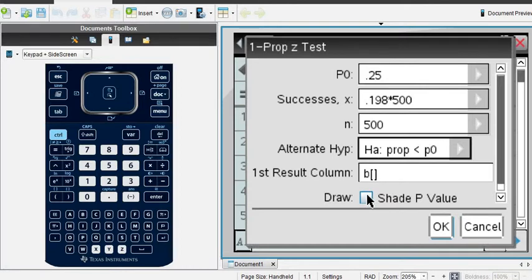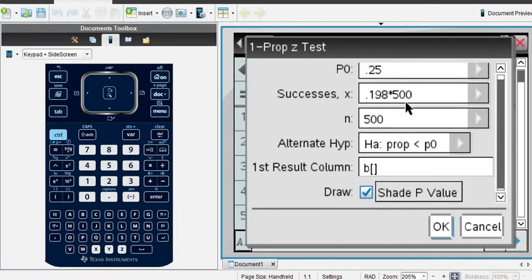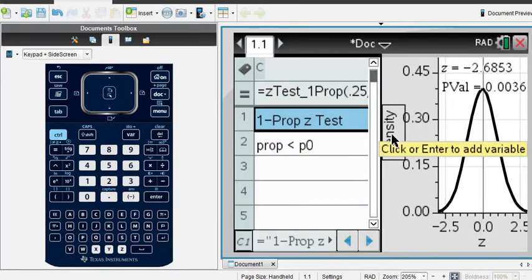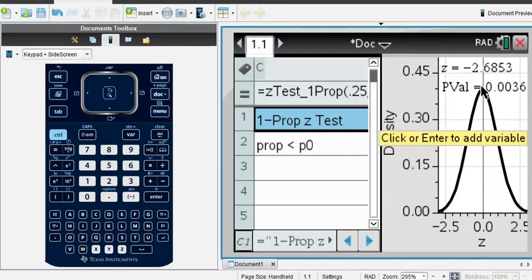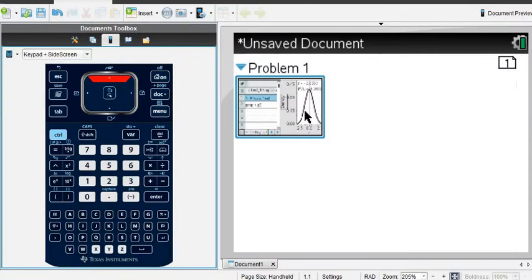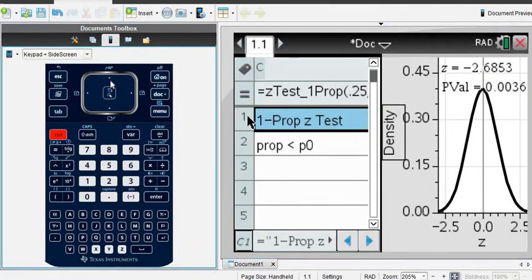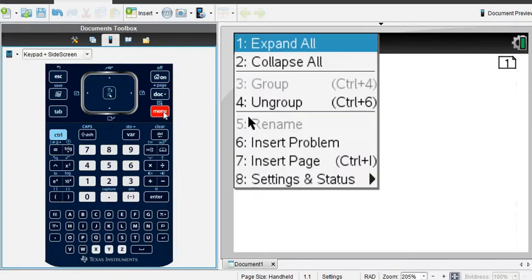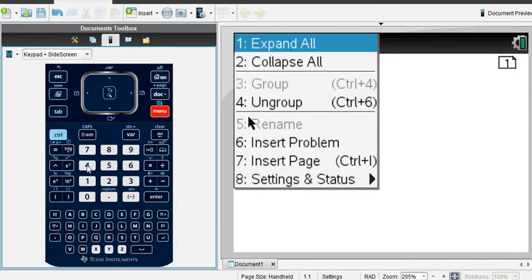And then I'm going to click the draw. The draw will allow us to see the model in our calculator, and it will shade the P value. And then when we hit OK, it gives us our values here. You can kind of see the results over here, the negative 2.6853, the 0.0036. If you would like to see it more clearly, you can hit CTRL and the up arrow, and then click on, CTRL and up arrow, it was already highlighted. Click menu and number 4 ungroup.